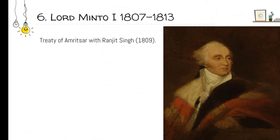Lord Minto I signed the Treaty of Amritsar with Maharaja Ranjit Singh in 1809. At that time, Amritsar was the center of power in the northern part of India. Maharaja Ranjit Singh consolidated all 12 Misls into one — the state of Punjab — making his army very strong. He took support from some French advisors to train his army with modern equipment and warfare techniques. The British, being opportunistic, made a friendship treaty with him when he was powerful, but after his death by 1848–1849 they attacked and conquered Punjab.